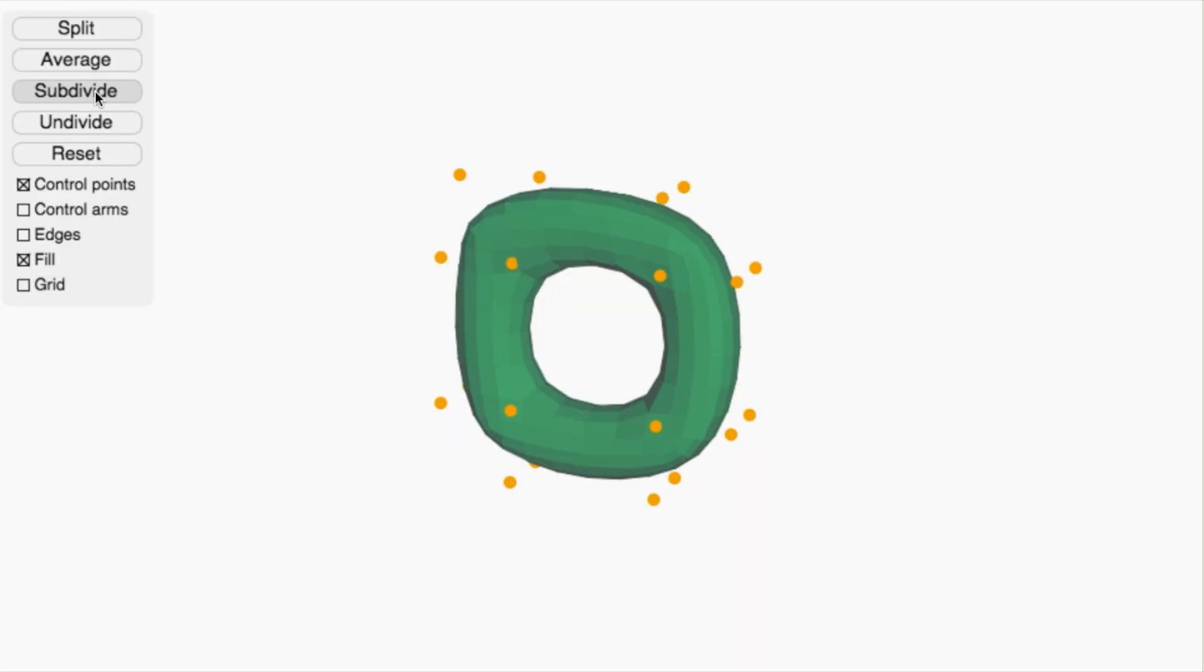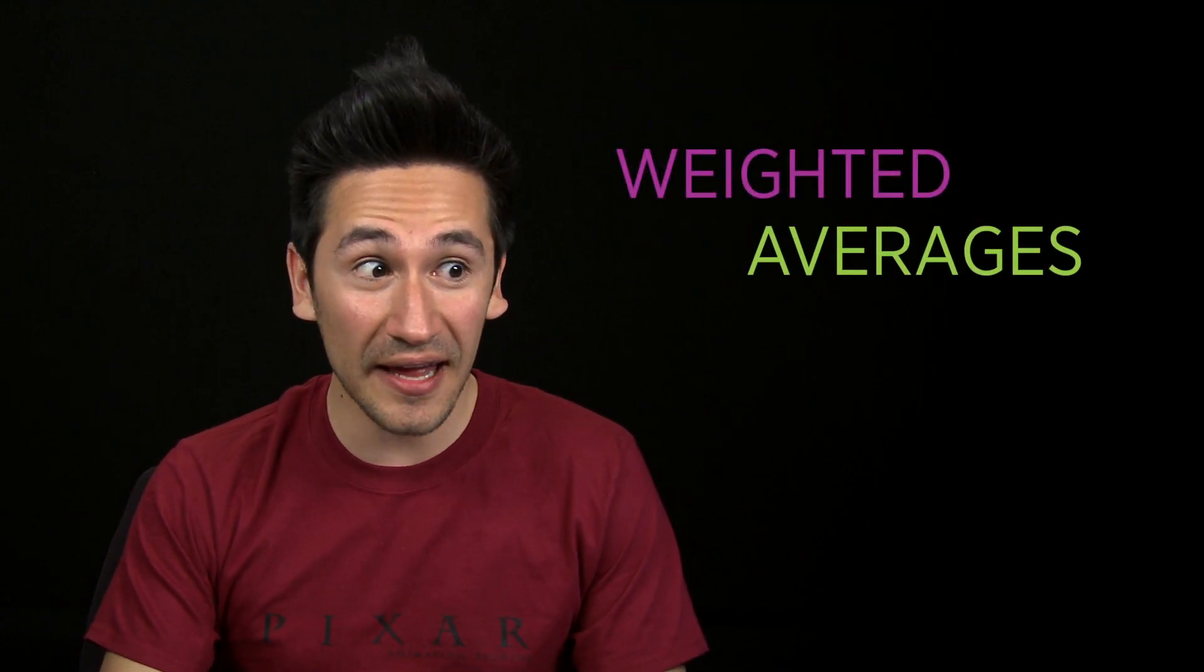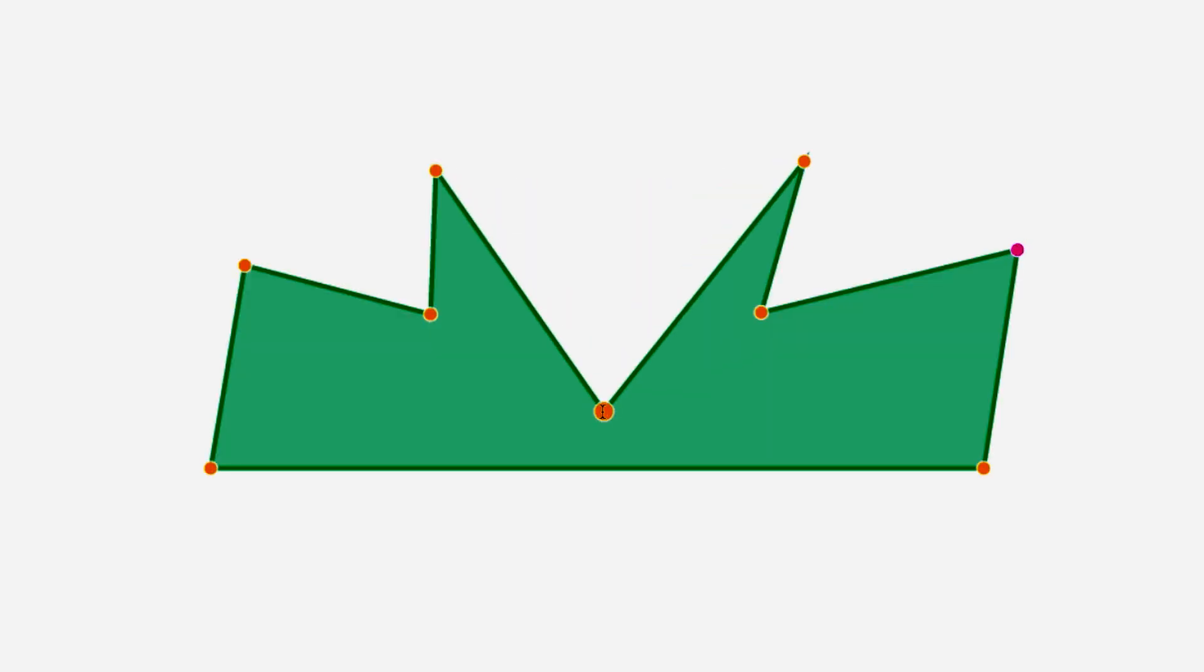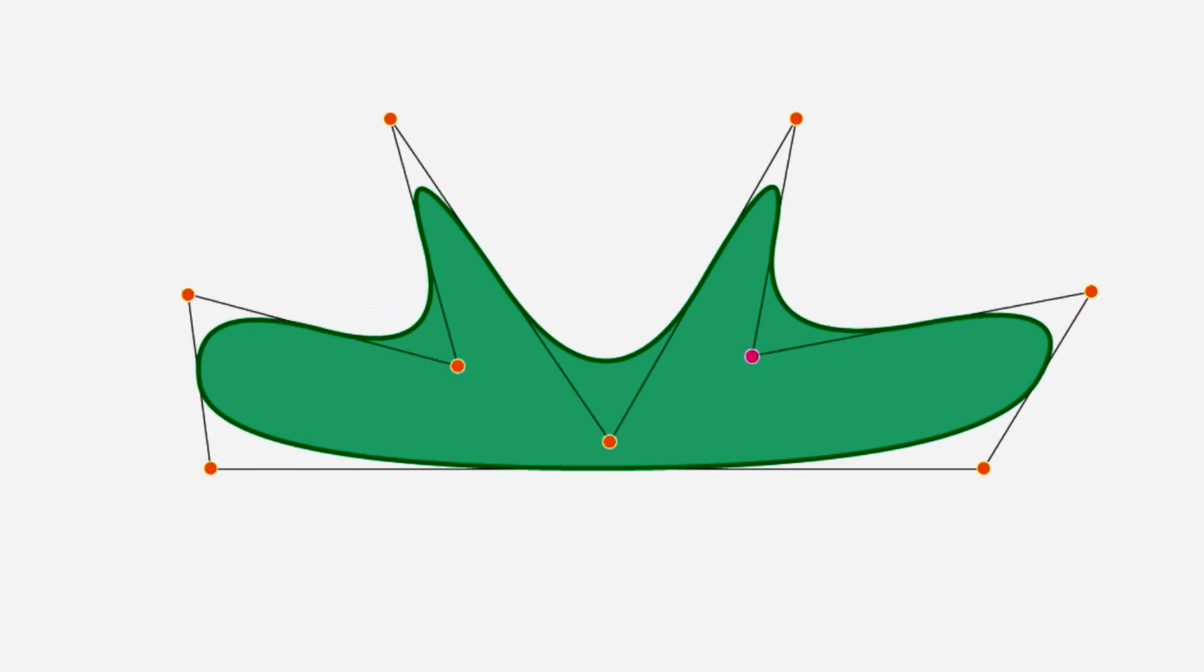So far, we've seen how to use subdivisions to create the surfaces that define the shapes of our characters. In this lesson, we're going to delve deeper into the mathematics behind weighted averages. And just like before, we're going to start with a simpler version, which is looking at the 2D curves before looking at 3D surfaces.